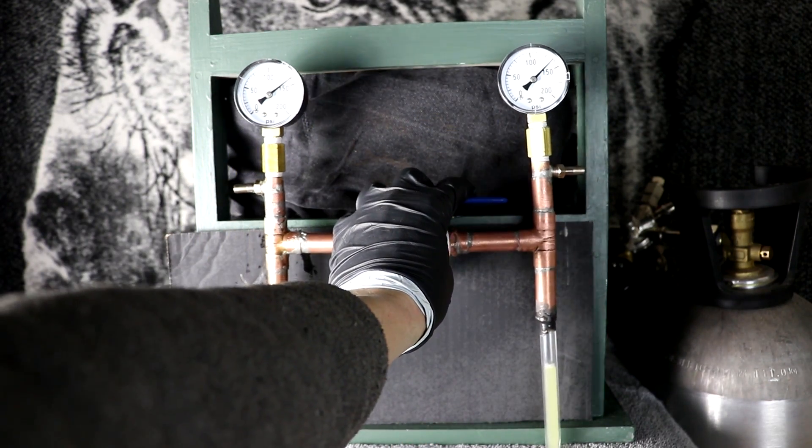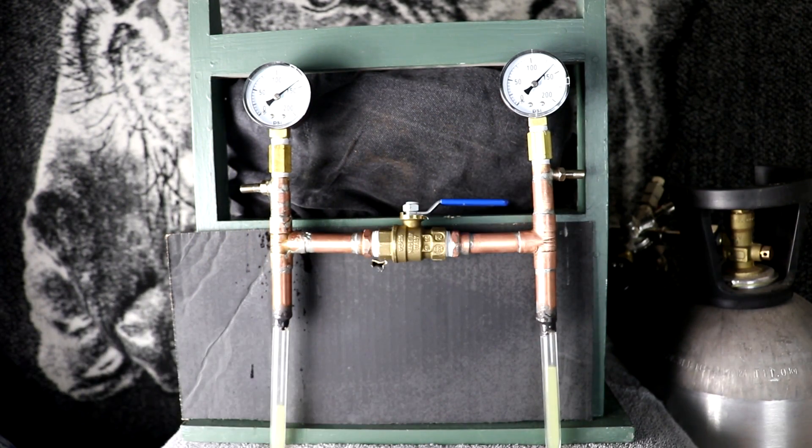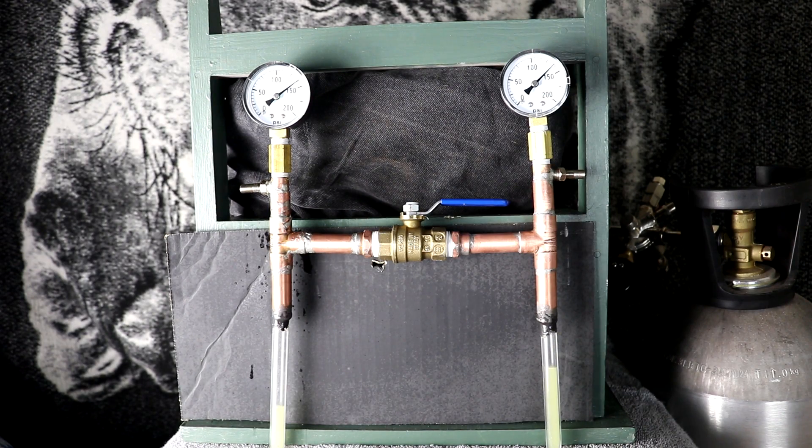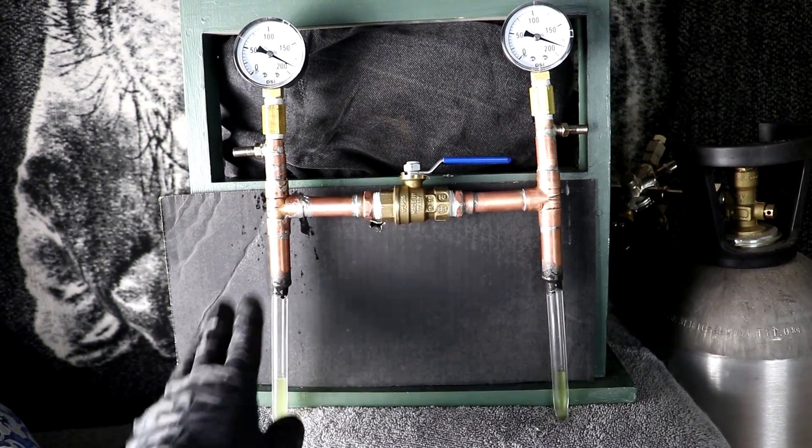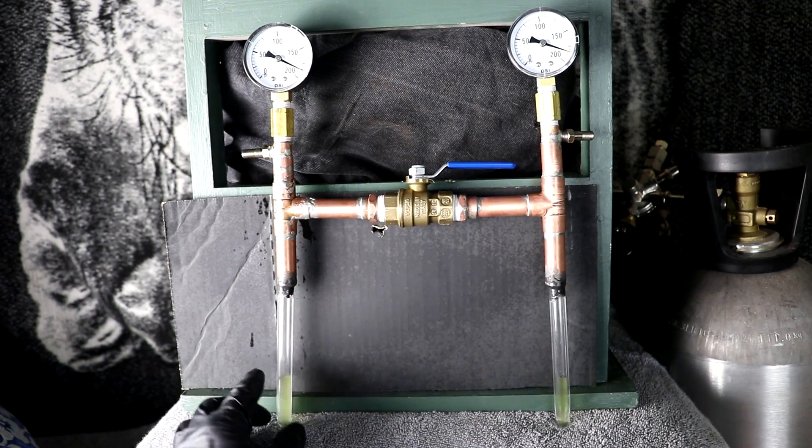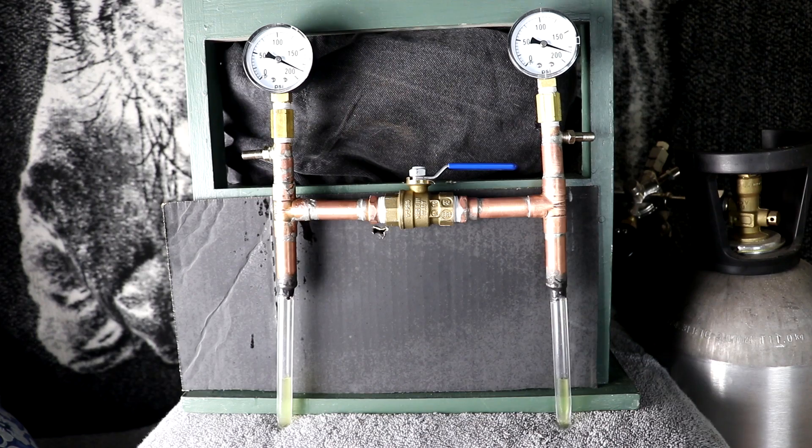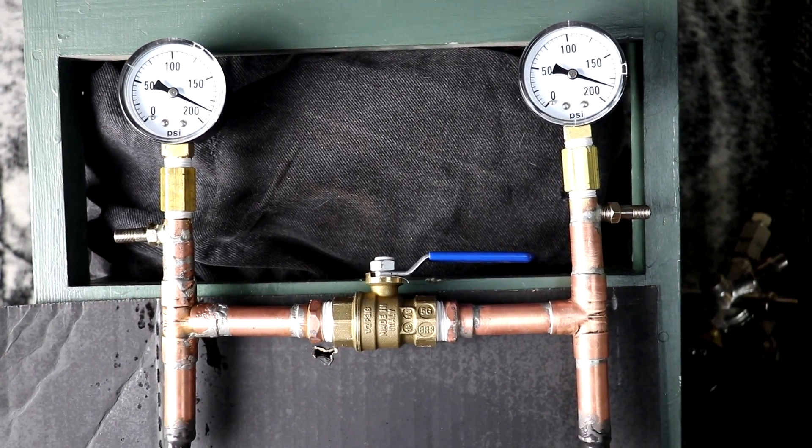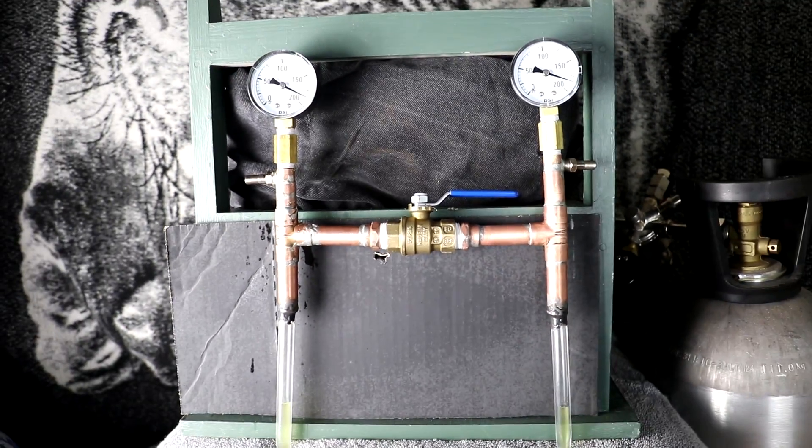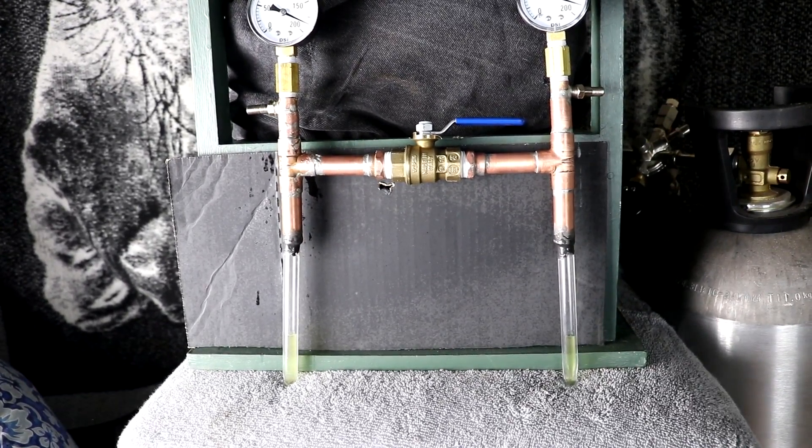So let's set that up and let it warm back up to room temperature. And now that everything's come back up to room temperature, you can see the liquid level has decreased and the pressure is just about 190 pounds per square inch.